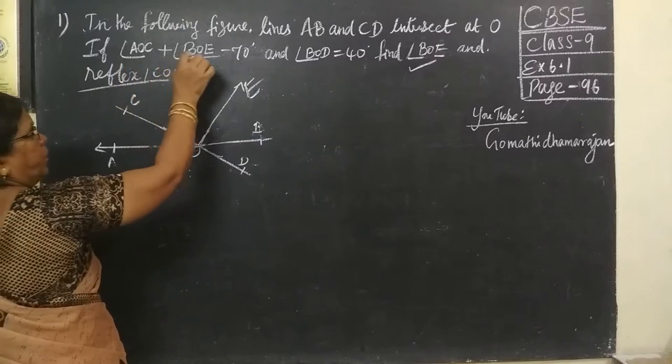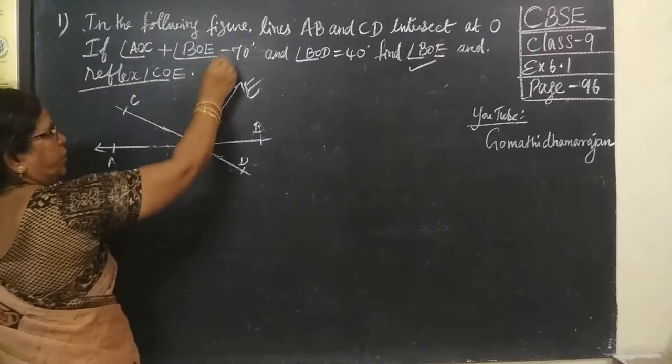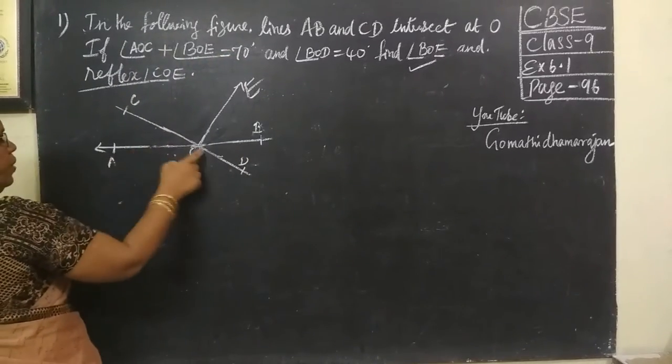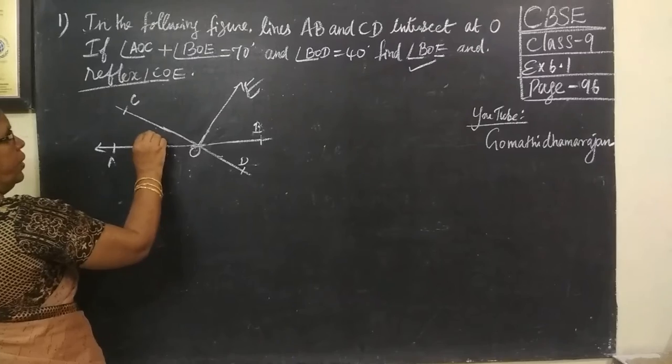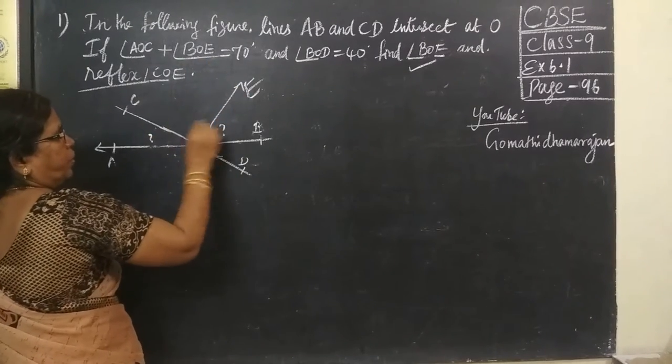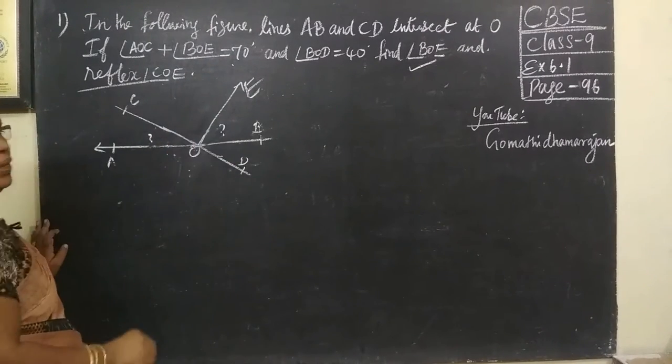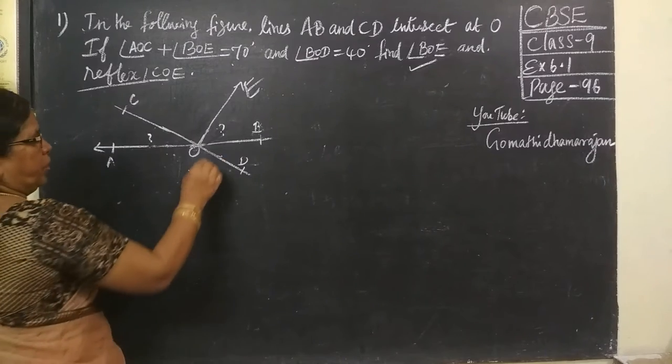And angle AOC plus BOE equal to 70 degrees. This is AOC, this one. And BOE, this one. If you add these two, you are getting 70.